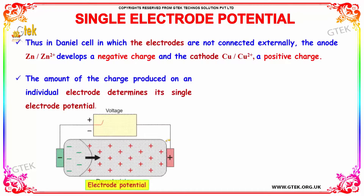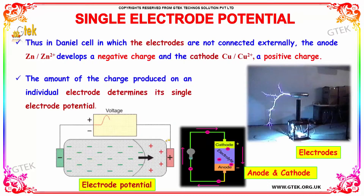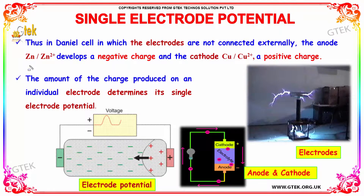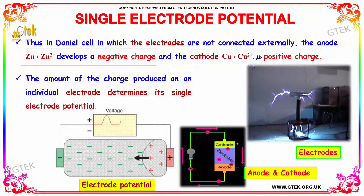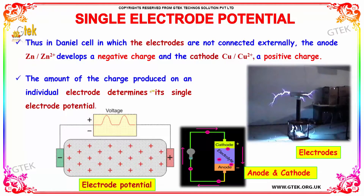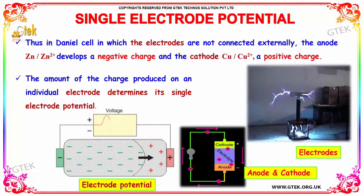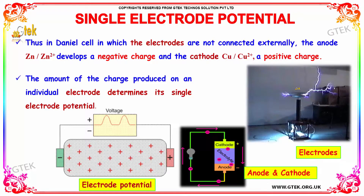In the Daniel cell, when the electrodes are not connected externally, the anode, that is zinc, develops a negative charge, and the cathode, that is copper, develops a positive charge. The amount of charge produced on an individual electrode determines its single electrode potential. You can see the depiction of the single electrode, anode and cathode, and a real-time depiction of how the electrode works.